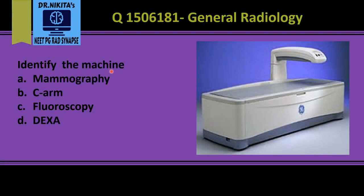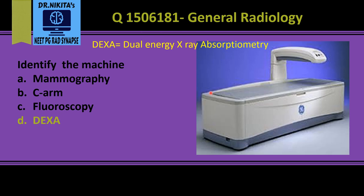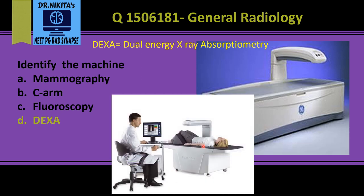Identify the machine — this is a DEXA machine, that is dual energy x-ray absorptiometry, which is done for BMD, that is bone mineral density. This is a central DEXA machine; as you can see, the patient lies like this, a pad is given under the knees to flatten the pelvis. This central DEXA is used to calculate the density in the lumbar spine and the hips. The image gives you the bone mineral density, a T-score, and a Z-score.